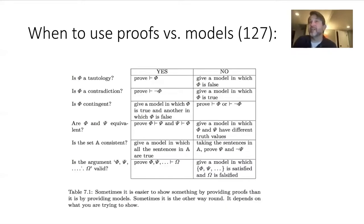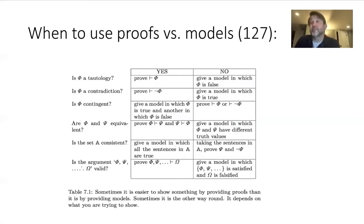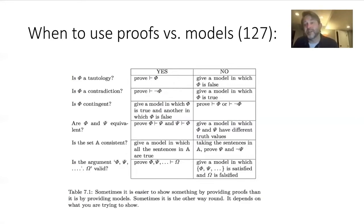It should now be clear that using formal methods is sometimes a better way to show certain properties. If we want to prove the validity of an argument, using the logical notion gives us a finite way to do that rather than having to enumerate every possible situation in which the premises are true. We can just use derivation. But sometimes informal methods are better: if we want to show that an argument is invalid, it may be better to construct a counterexample that renders the premises true while the conclusion is false, because that's a finite approach. This chart, presented on page 127 of your textbook, provides a good opportunity to see when one or the other method is the better one to adopt.